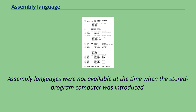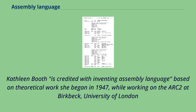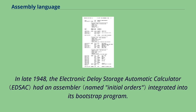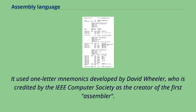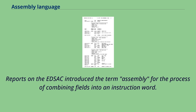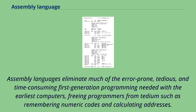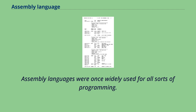Assembly languages were not available at the time when the stored program computer was introduced. Kathleen Booth is credited with inventing assembly language based on theoretical work she began in 1947, while working on the ARC2 at Birkbeck, University of London, following consultation by Andrew Booth with mathematician John von Neumann and physicist Herman Goldstine at the Institute for Advanced Study. In late 1948, the Electronic Delay Storage Automatic Calculator had an assembler integrated into its bootstrap program, using one-letter mnemonics developed by David Wheeler, who is credited by the IEEE Computer Society as the creator of the first assembler. SOAP was an assembly language for the IBM 650 computer written by Stan Poley in 1955. Assembly languages eliminate much of the error-prone, tedious, and time-consuming first-generation programming needed with the earliest computers, freeing programmers from tedium such as remembering numeric codes and calculating addresses.